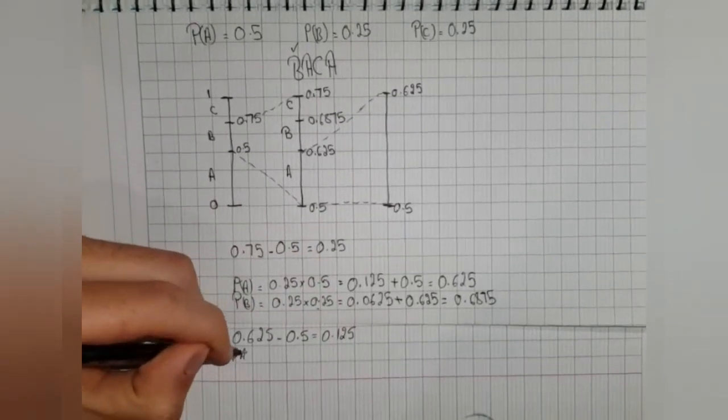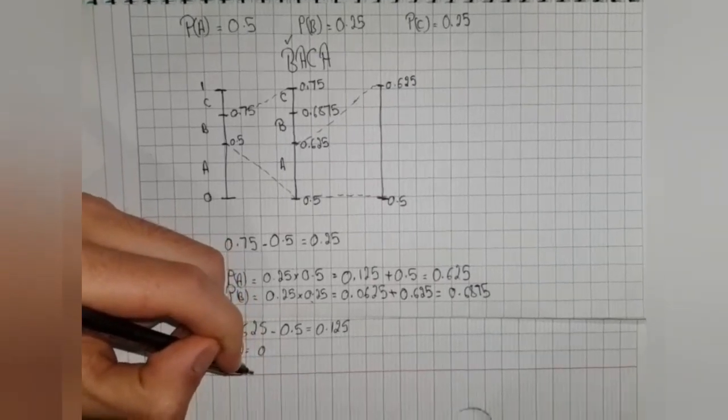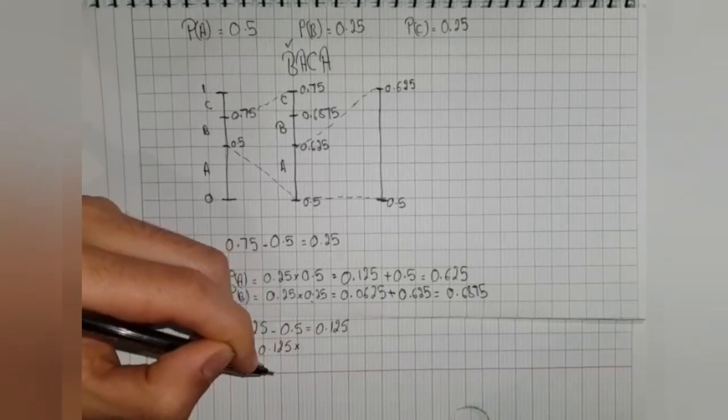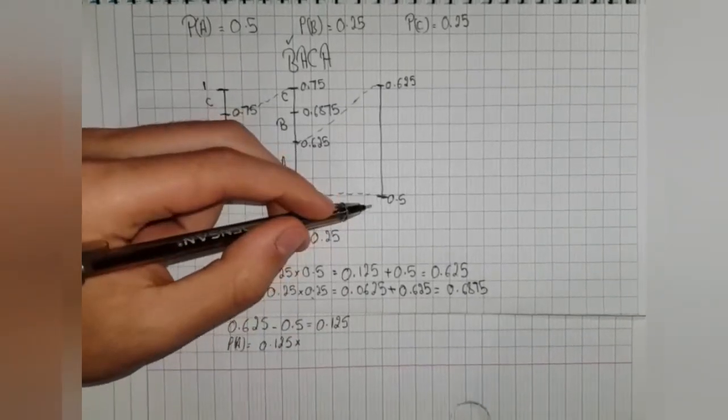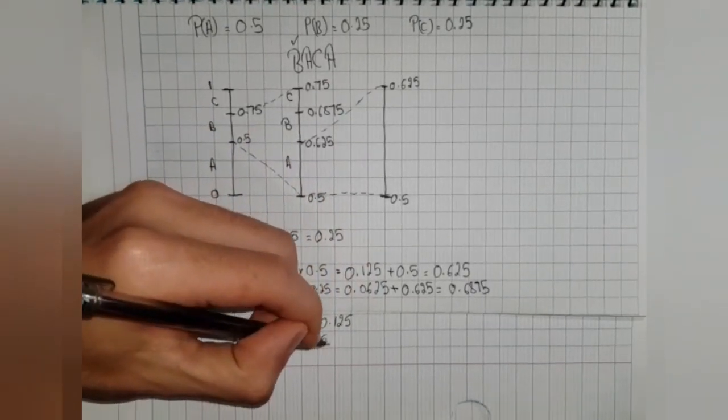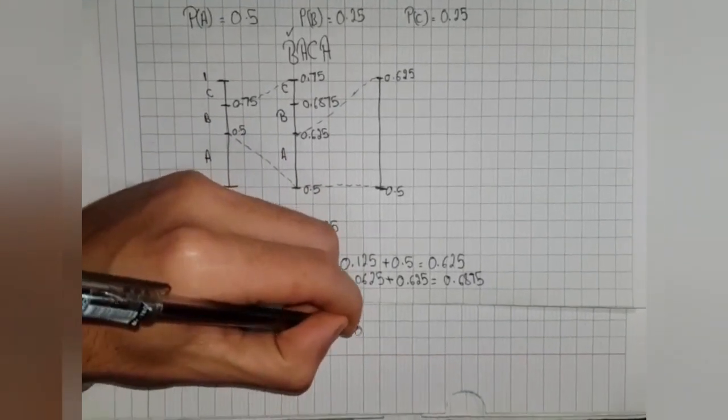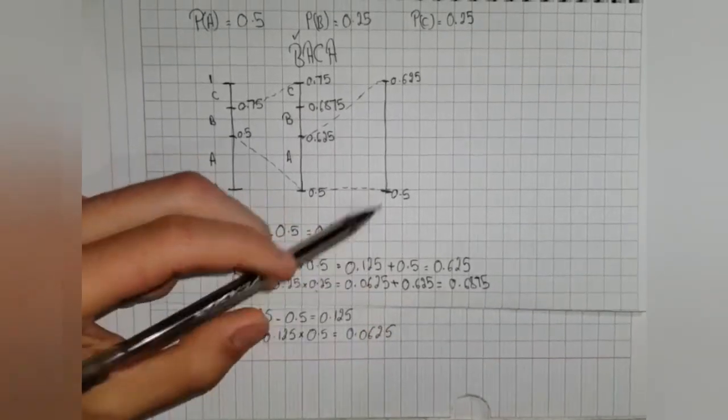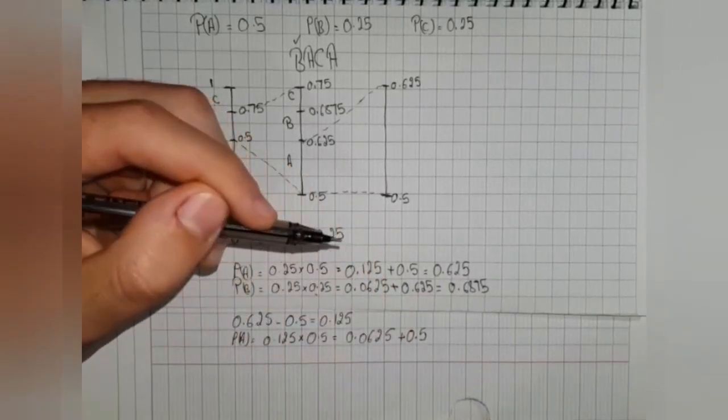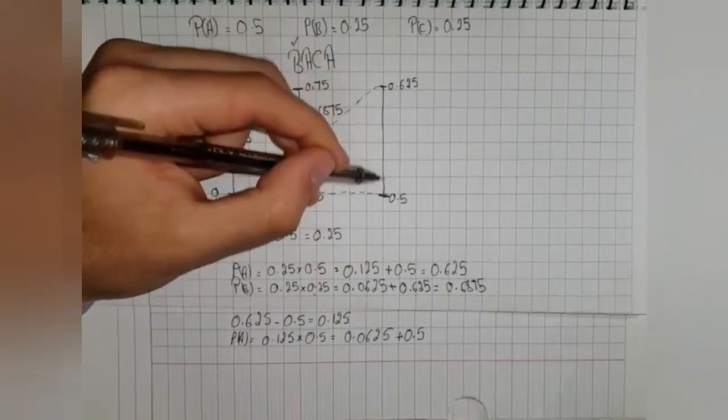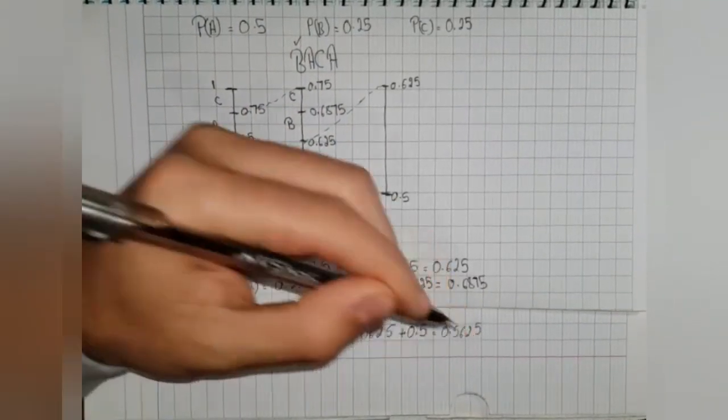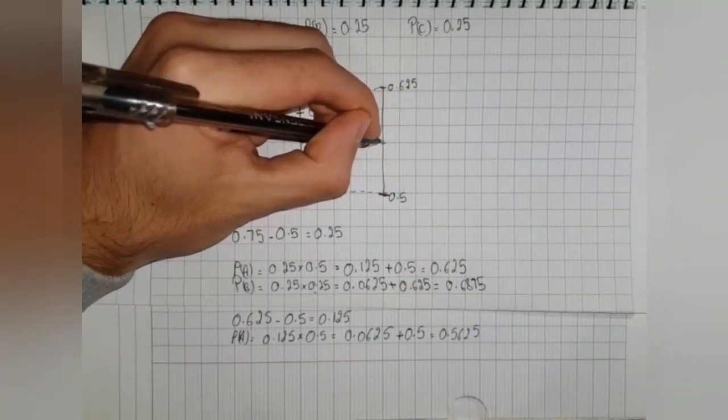The first probability, pa, is 0.125 times 0.5, because to find the interval it will be 0.0625, and we should add 0.5 to know where its location is on the line. It will be located here.